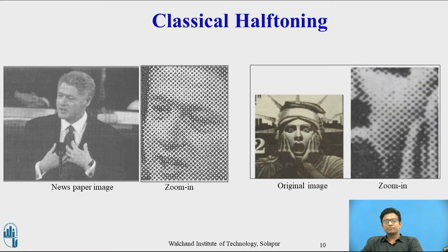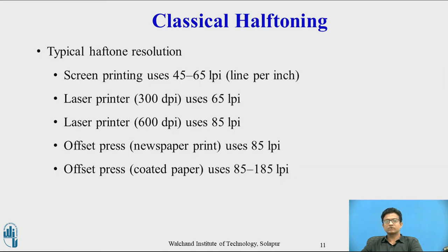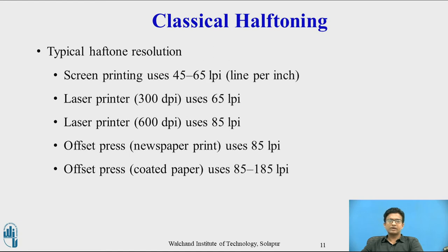These are examples of half-tone patterns. In a newspaper image, when you zoom in, you can see the half-tone patterns used in the printing process. Typically, half-tone resolutions used for printing: screen printing uses 45 to 65 LPI (lines per inch); laser print uses 65 LPI and 600 DPI (dots per inch); offset newspaper print uses 85 LPI; and offset coated paper print uses 85 to 185 LPI.